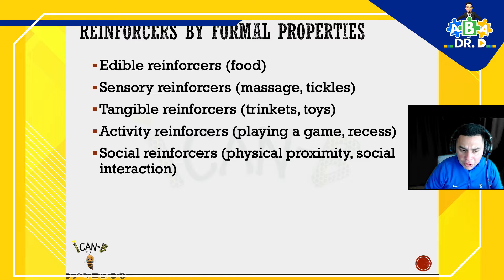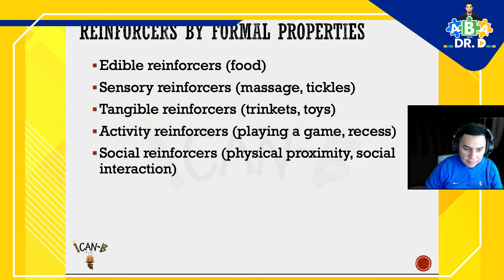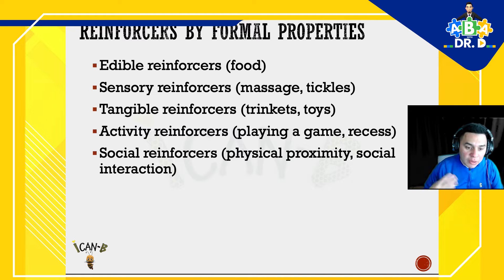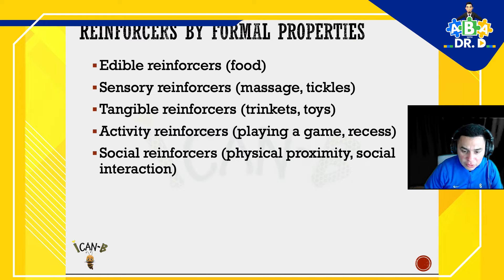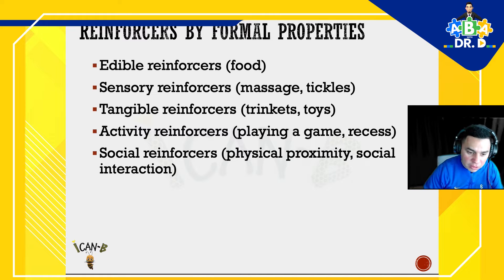When looking at reinforcers, you can have edible reinforcers such as food, sensory reinforcers like massage and tickles, tangible reinforcers, activity reinforcers, and social reinforcers such as physical proximity and social interaction. Some of these, like social praise, may not mean much for a student at first — that's why the whole aspect of conditioning and building rapport with the student is so essential to establish these activities as reinforcers.